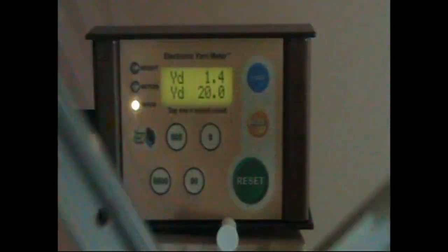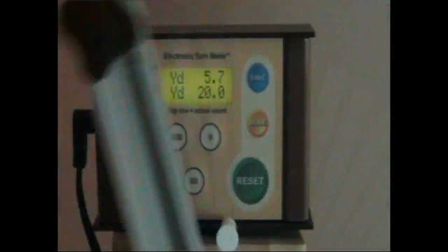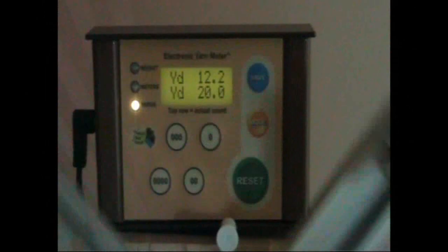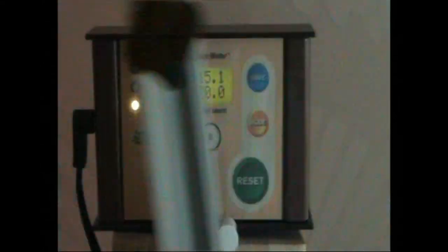And on top of that we're going to enter a preset number of 20 yards. We can see the odd number on the top row being calculated because we have less than a yard on each rotation, but still it's keeping accurate track of that measurement. Even though it wasn't an even yardage figure, when it gets to 20 yards cumulative, it will sound the beep and shut off the motor.